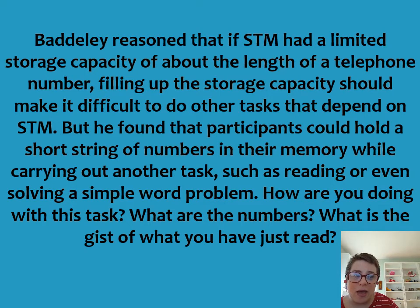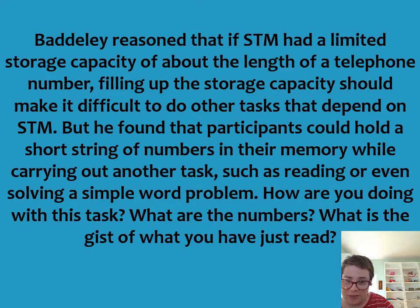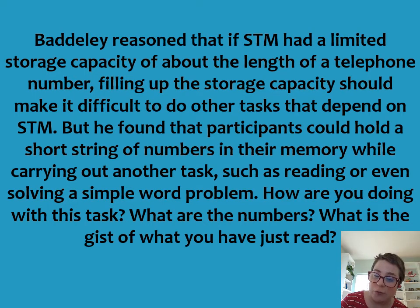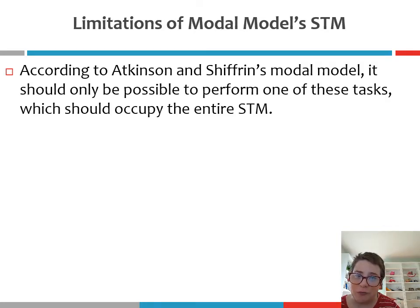The following passage: 'Baddeley reasoned that if short-term memory had a limited storage capacity of about the length of a telephone number, filling up the storage capacity should make it difficult to do other tasks that also depend on short-term memory. But he found that participants could hold a short string of numbers in their memory while carrying out another task such as reading or even solving a simple word problem.' What are those numbers? What is the gist of what you just read? Very effortlessly, we're all able to recite 7149 while also understanding the basic meaning of this passage.